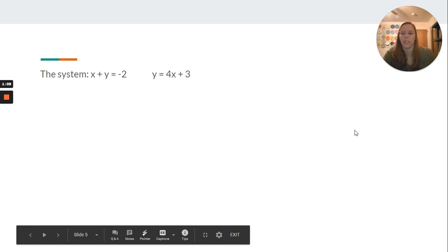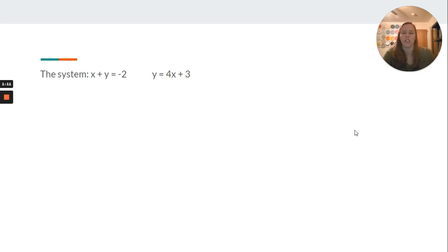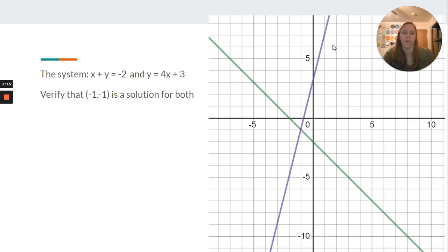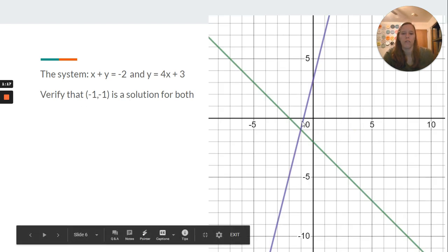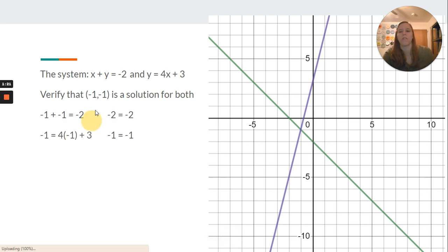Then our next system is x plus y equals negative 2, y equals 4x plus 3. Again, we graph them here. Negative 1, negative 1, verify it's a solution for both. Negative 1 plus a negative 1 is negative 2. Negative 2 equals negative 2. Negative 1 equals 4 times negative 1, which would be negative 4. Negative 4 plus 3 is going to give us a negative 1.